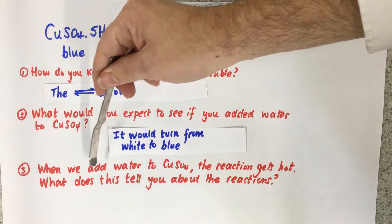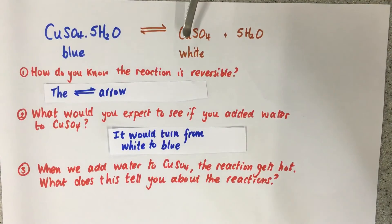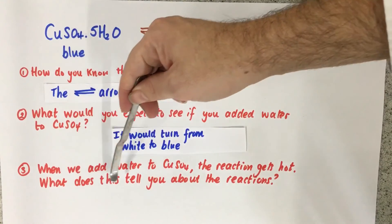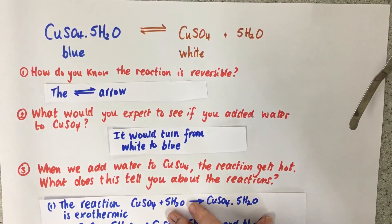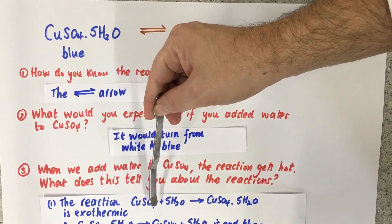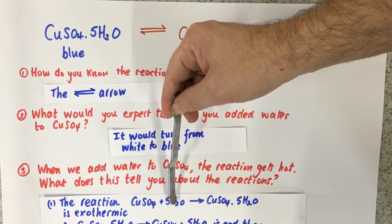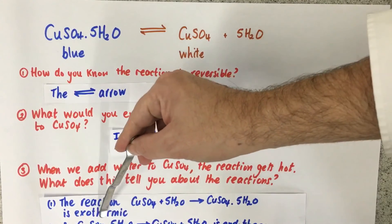And last, when we add water to CuSO4, the reaction gets hot. So when you mix white anhydrous copper sulfate plus water, the reaction goes that way. You end it with blue CuSO4·5H2O, and that reaction gets hot. What does this tell you about the reactions? Well, because the reaction gets hot, we can say the reaction CuSO4 plus 5H2O, the anhydrous copper sulfate, goes to hydrated copper sulfate, is exothermic, because it gets hot.